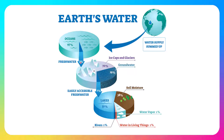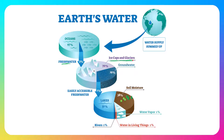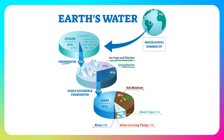That leaves roughly 3% of Earth's water as fresh water. If we break down fresh water into its components, 70% of that 3% is contained within the ice caps and glaciers, meaning it's locked as a solid. 29% of that 3% is groundwater, contained deep underground. Then roughly 1% of that 3% — a very small fraction — is easily accessible fresh water.